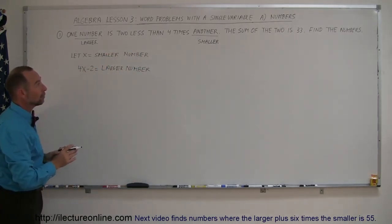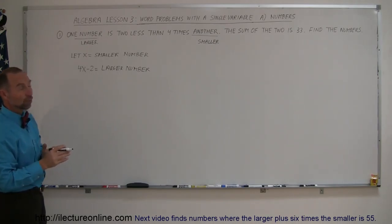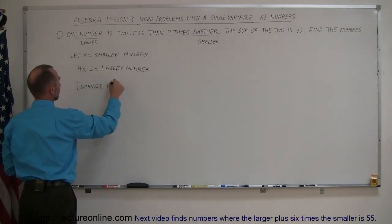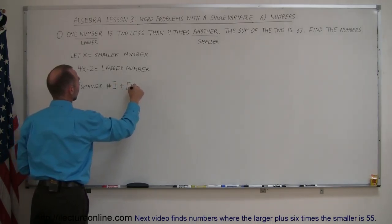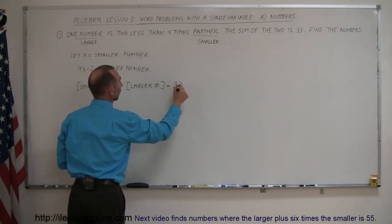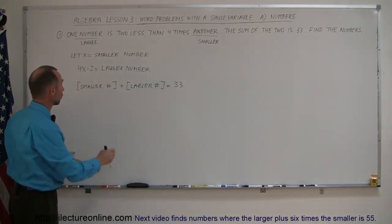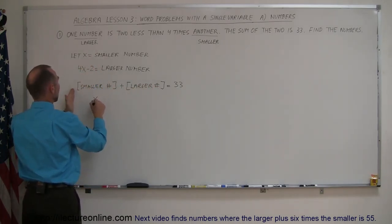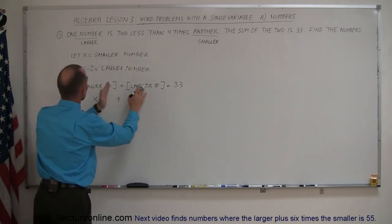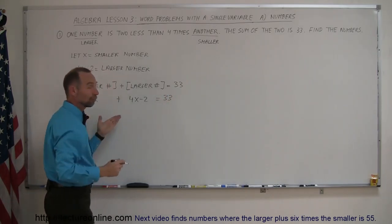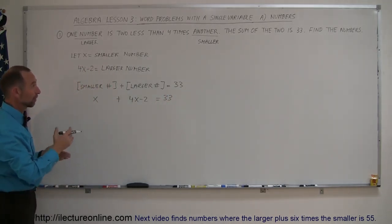Now we can go ahead and use the other information. It says that the sum of the two is 33, which means that the smaller number plus the larger number equals 33. The smaller number was represented by x, and the larger number was represented by 4x minus two. And that should add up to 33, and then all we have to do here is solve for x, and we figure out what the two numbers are.